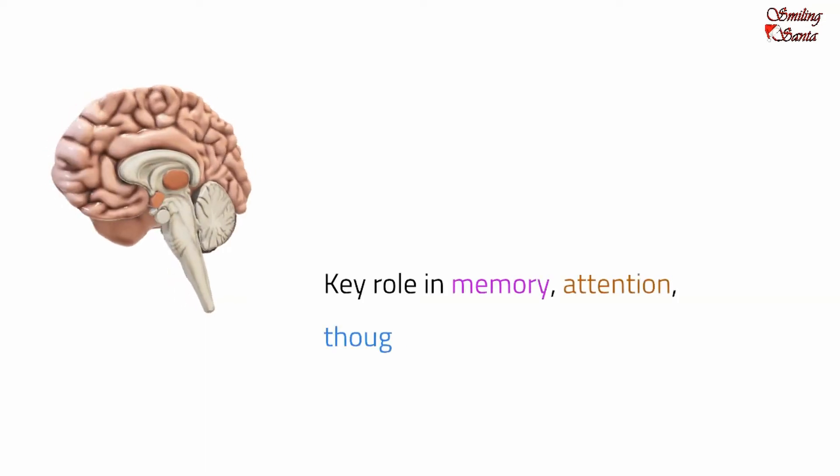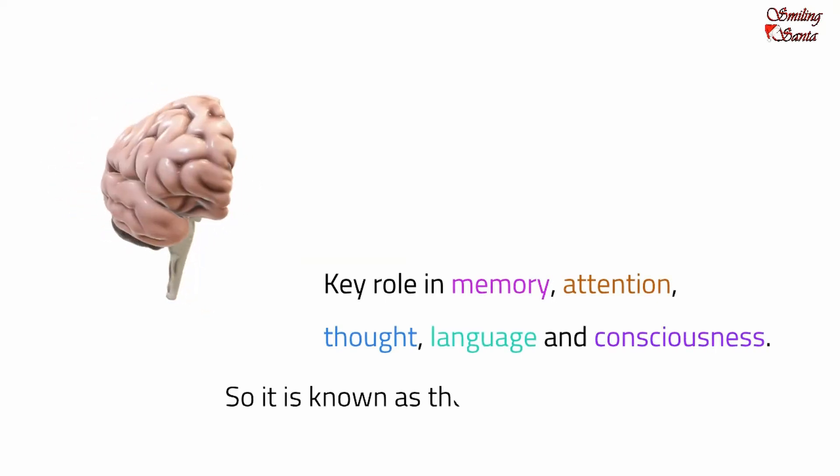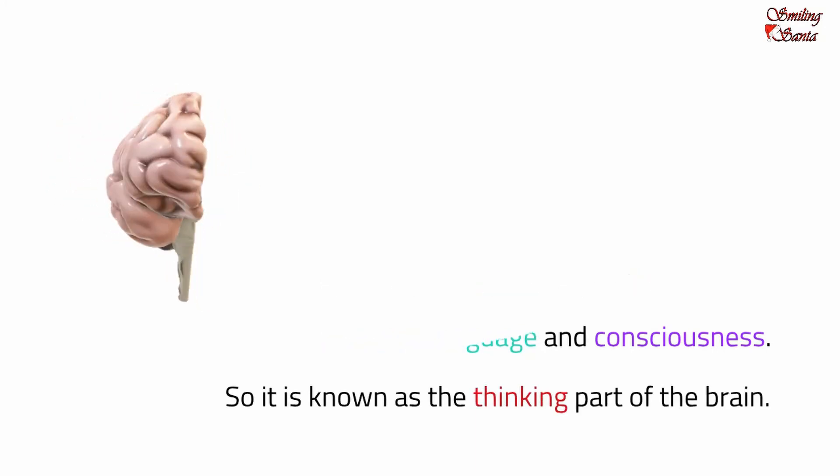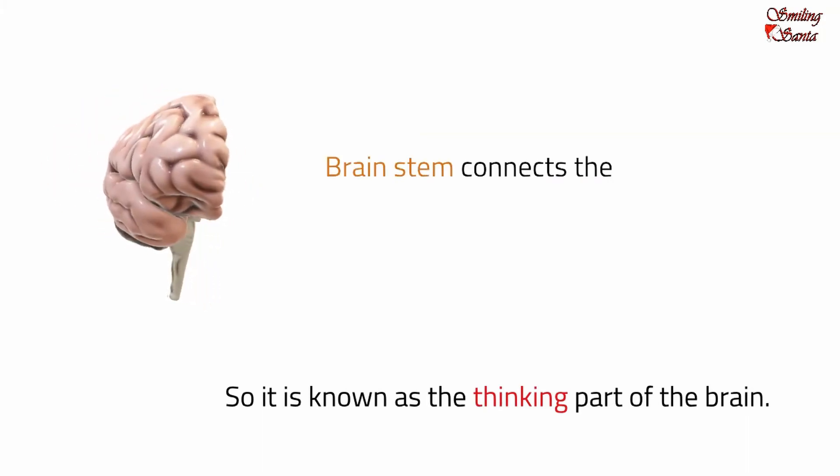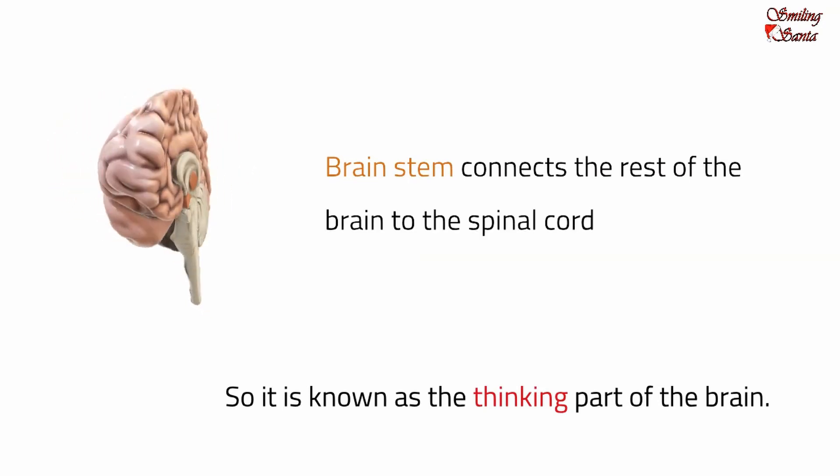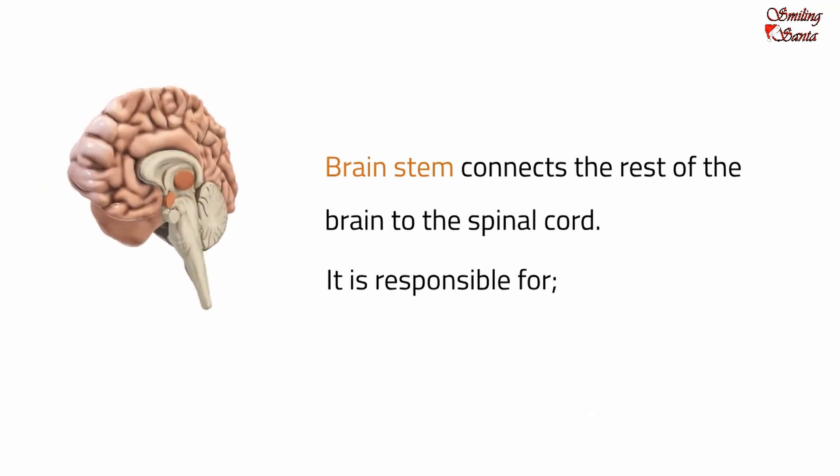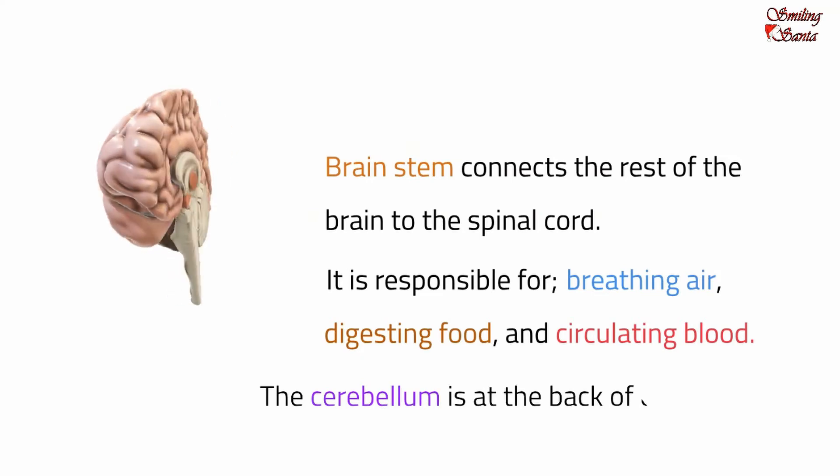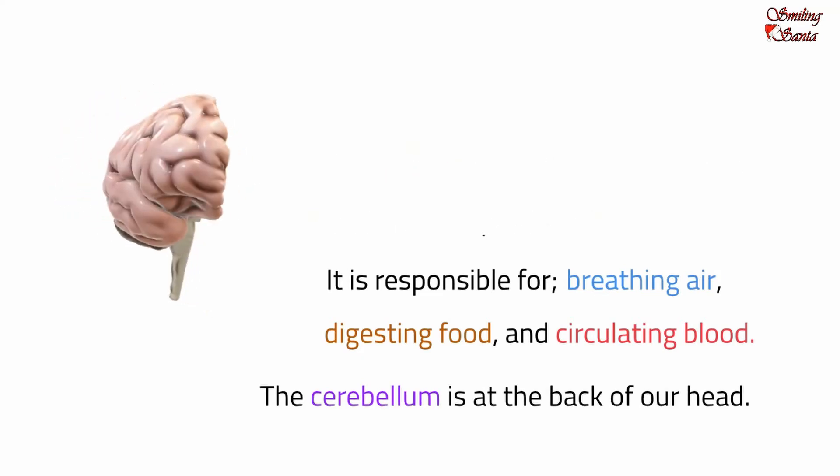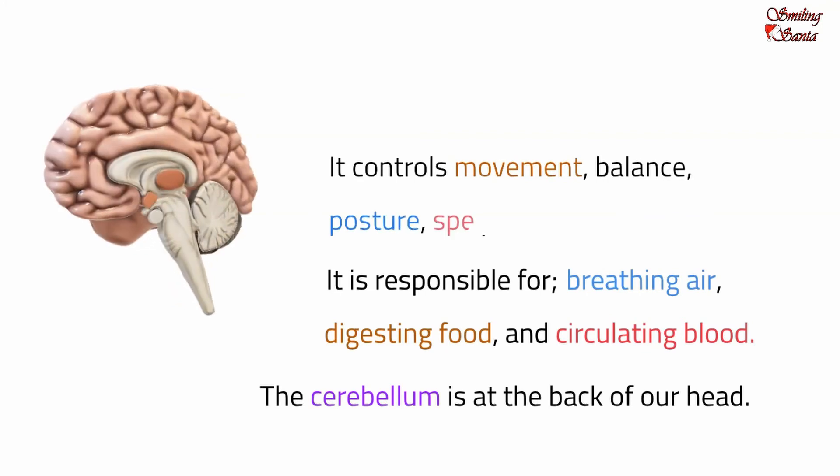The stem-like part of the brain is the brain stem. It connects the rest of the brain to the spinal cord. The brain stem is responsible for all the functions of our body like breathing air, digesting food, and circulating blood. The cerebellum is at the back of our head between the brain stem and the cerebrum. It controls movement, balance, posture, and speech attention.